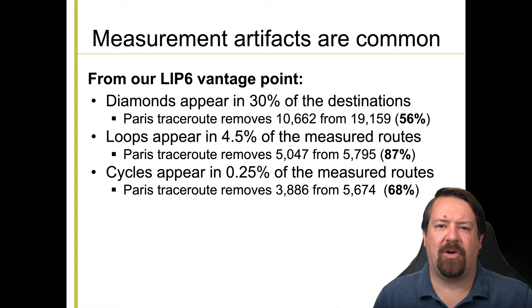Loops, on the other hand, occur when there's an error in routing or router configuration. And we see that Paris tracerout removes almost 90% of the observed loops. So most of those were an artifact of tracerout, and the remaining ones are the real errors and problems in the routing protocol. Cycles were much more scarce than loops to begin with, and again, are the result of errors in routing and router configuration. And the majority of those were removed by running Paris tracerout as well.